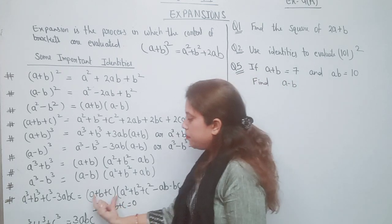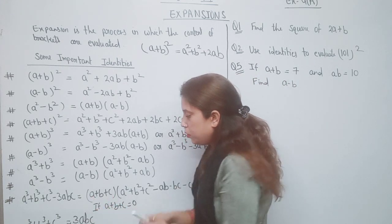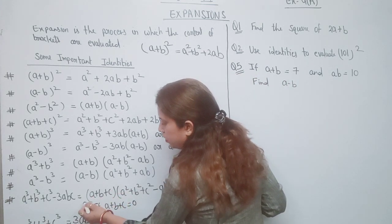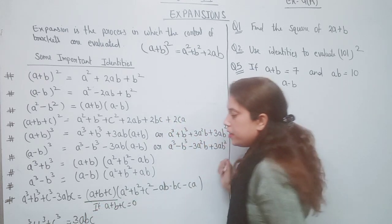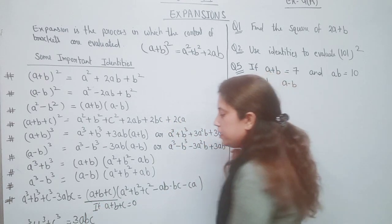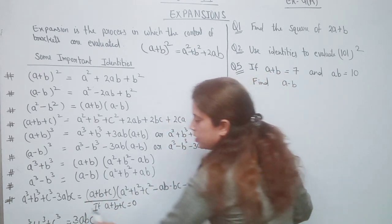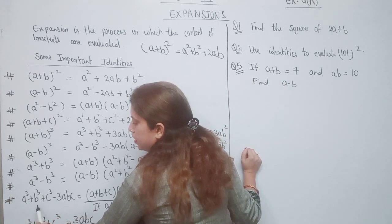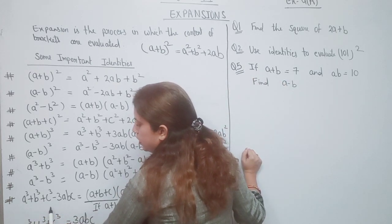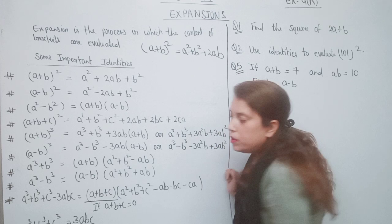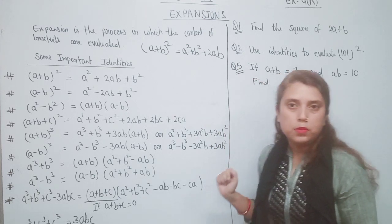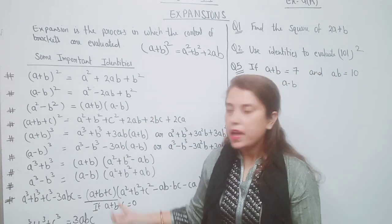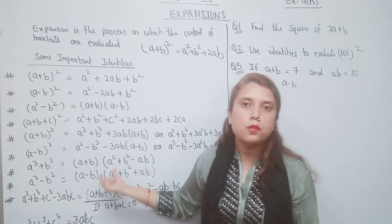If a+b+c = 0, then this whole term becomes 0, and the identity reduces to: a³+b³+c³ = 3abc. So you need to learn this identity as soon as possible.